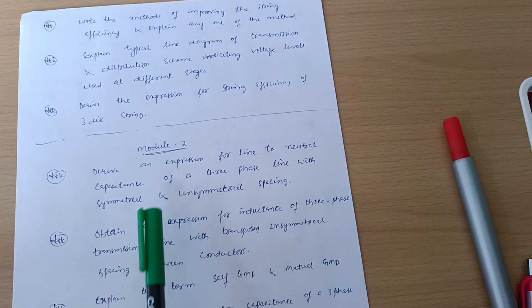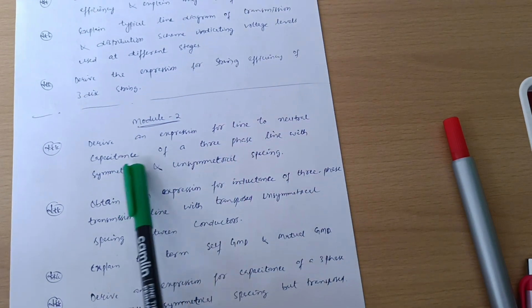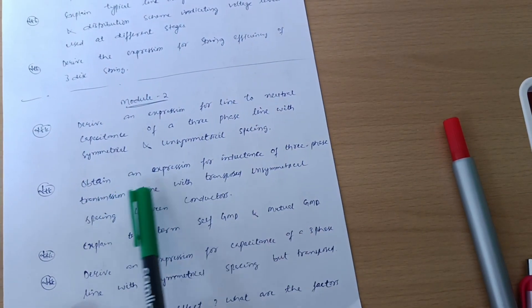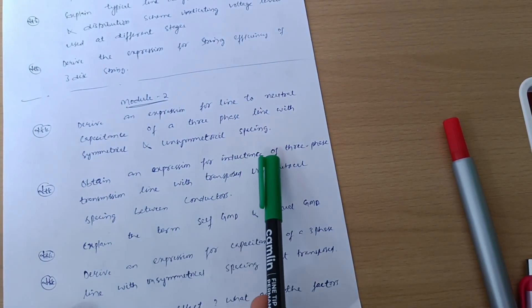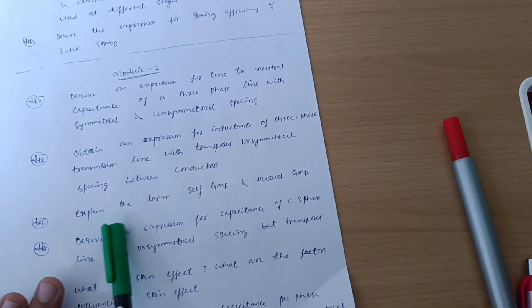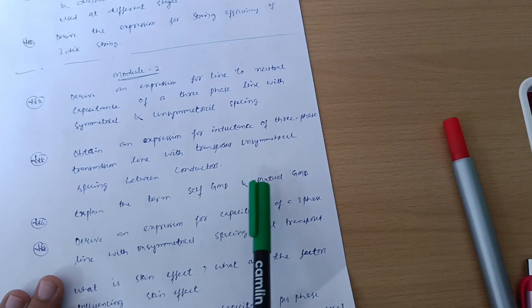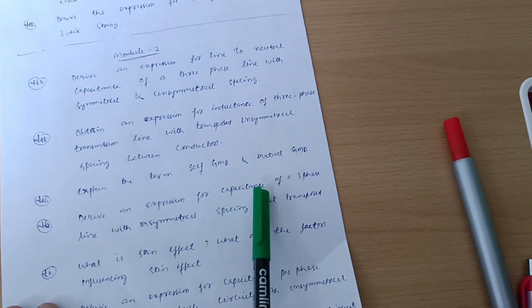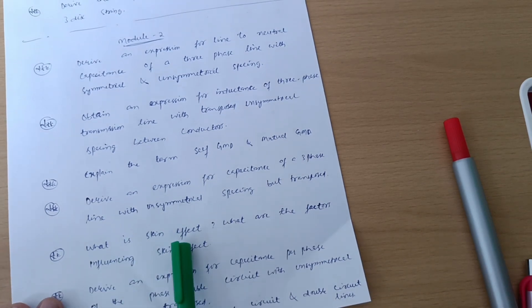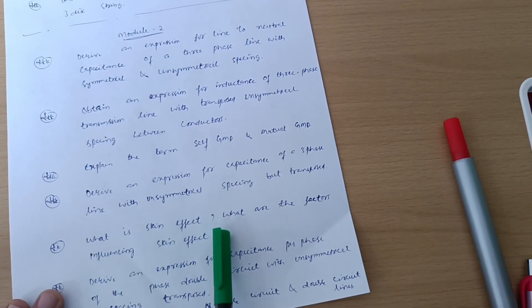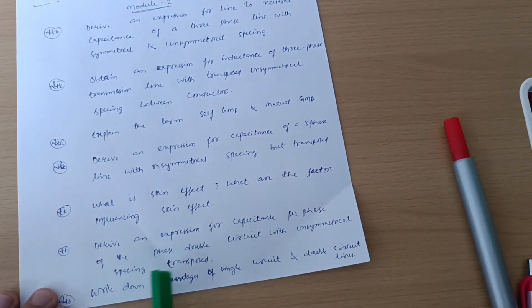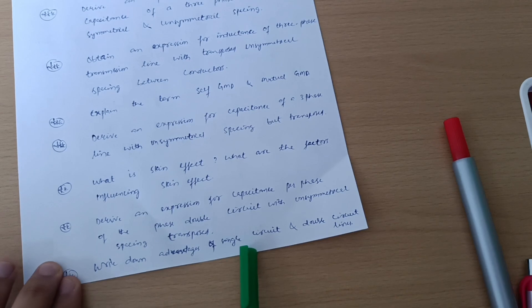Module 2: derive an expression for line to neutral capacitance of a three-phase line with symmetrical and unsymmetrical spacing. Obtain an expression for inductance of three-phase transmission line with transposed unsymmetrical spacing between conductors. Explain the term self GMD and mutual GMD. Derive an expression for capacitance of a three-phase line with unsymmetrical spacing but transposed. What is skin effect? What are the factors influencing skin effect? Derive an expression for capacitance per phase of a three-phase double circuit with unsymmetrical spacing transposed. Write advantages of single circuit and double circuit line.